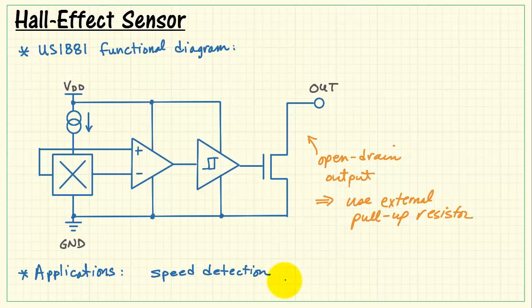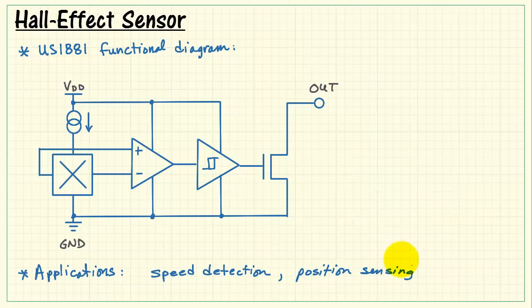Hall effect sensors have a number of applications, including speed detection and position sensing. If you can put a magnet on it, you can sense it. Let's take a look at some of the technical details of our US1881. It needs 3.5 to 24 volts. That means we need to use the MyRio plus 5 volt supply.